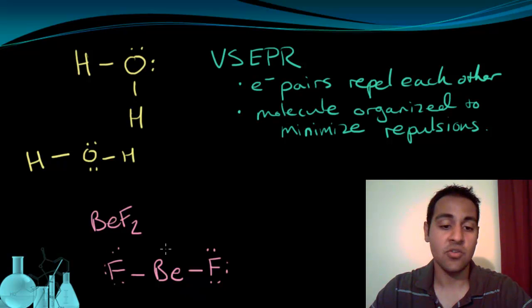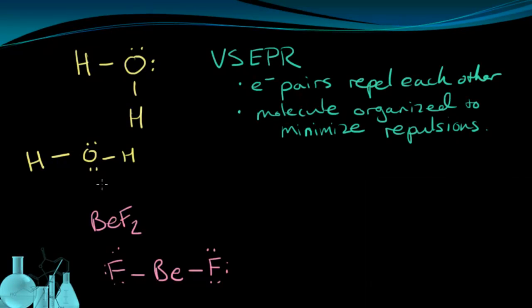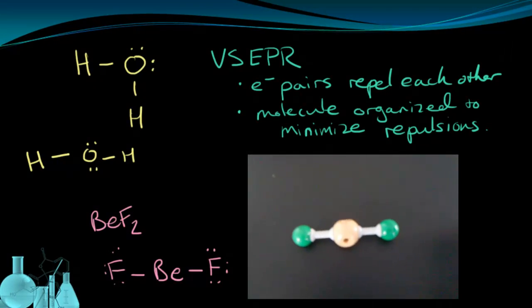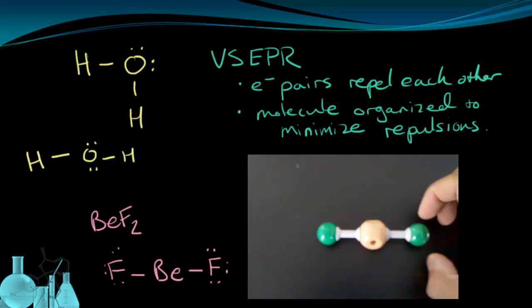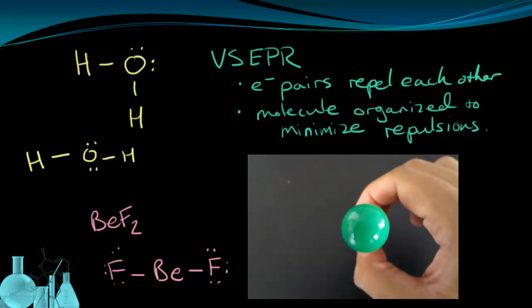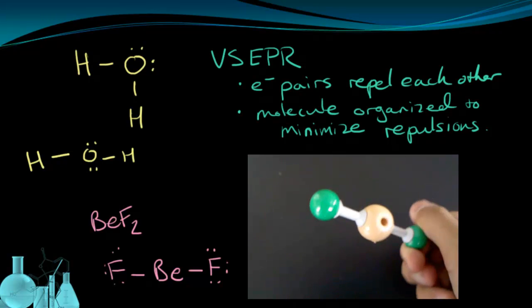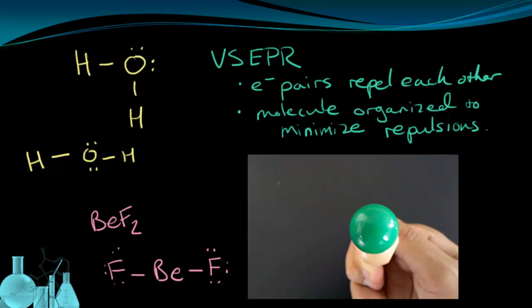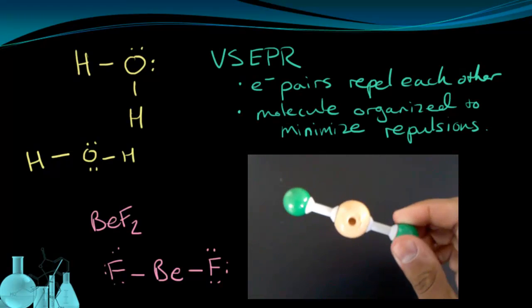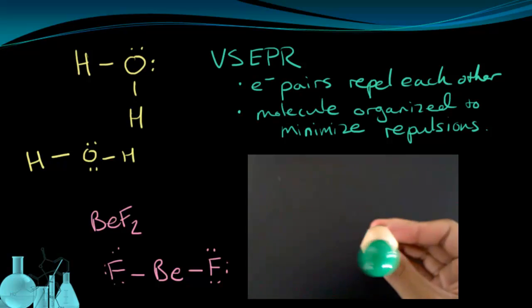So let's see if the actual molecule holds up to what the Lewis structure is telling us. Here's a model of the beryllium fluoride molecule. We can see the fluorines on the end, the green color. And as I move this around, you'll see that the atoms are in a line, forming this linear shape.